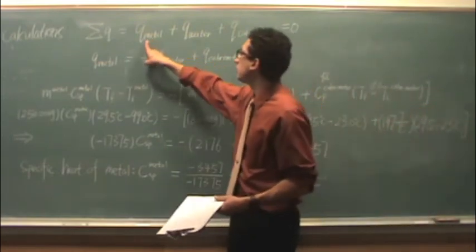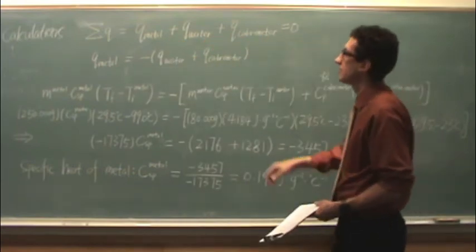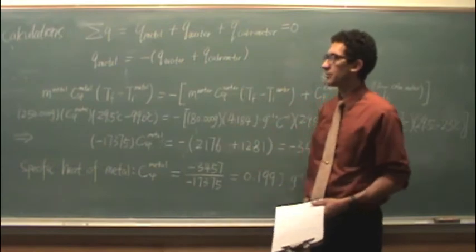So we solve for q metal by moving these to the other side. And so q metal is negative q water and q calorimeter.